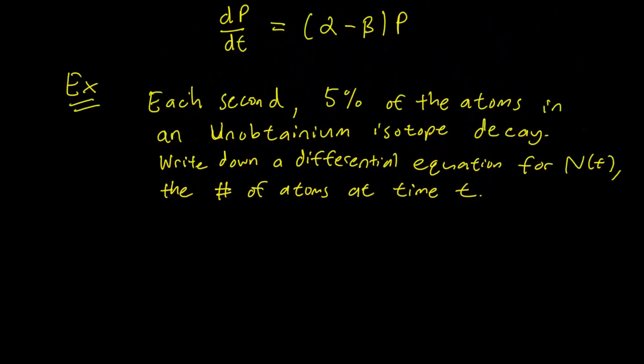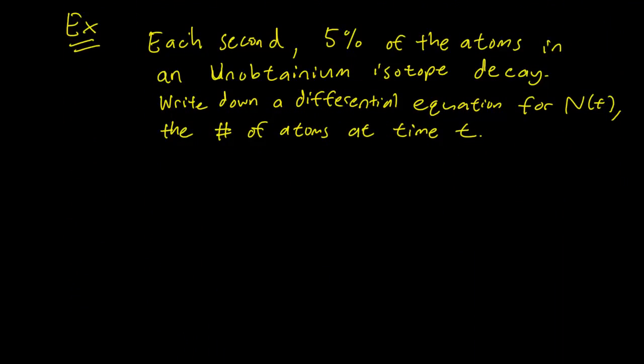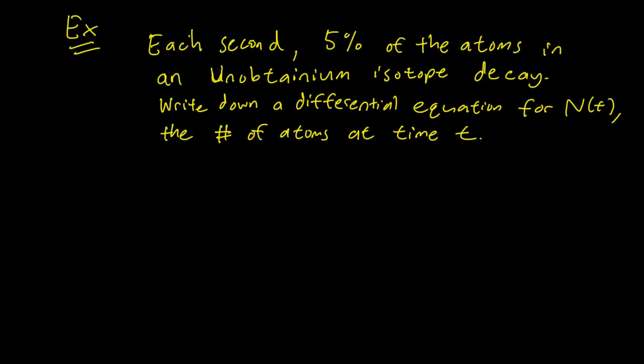So, in our old equation here, our alpha is 0, and our beta is 5%.